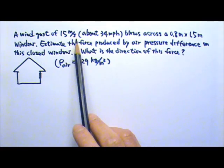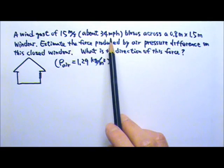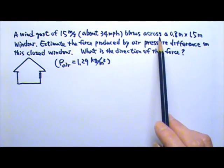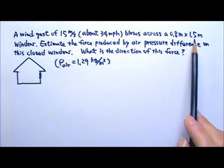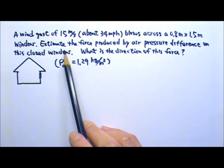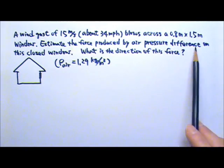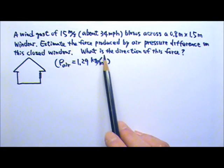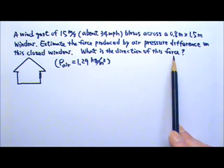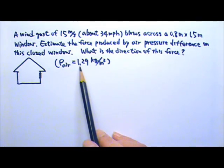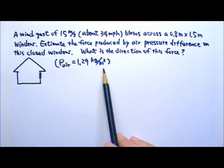A wind gust of 15 meters per second, which is about 34 miles per hour, blows across a 0.8 meter by 1.5 meter window. Estimate the force produced by air pressure difference on this closed window, and what is the direction of this force? The density of air is 1.29 kilograms per meter cubed.